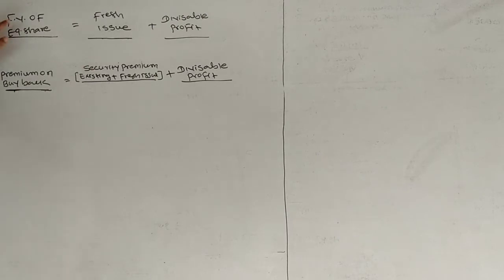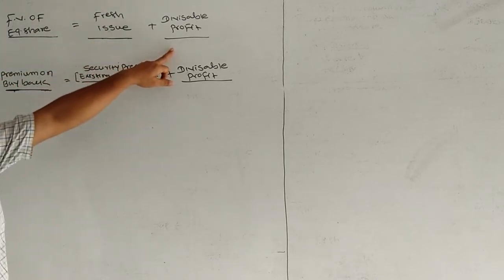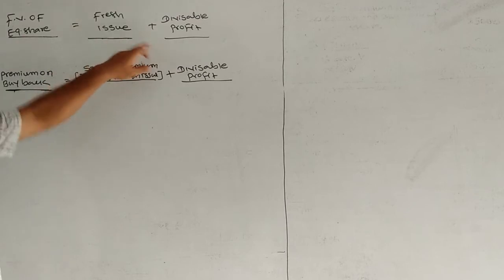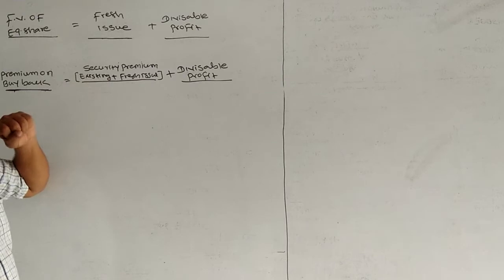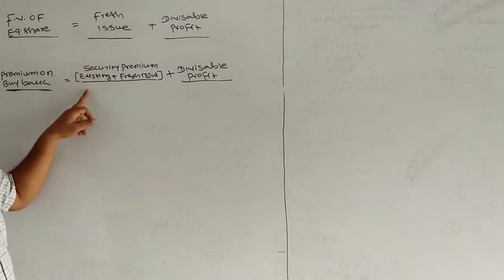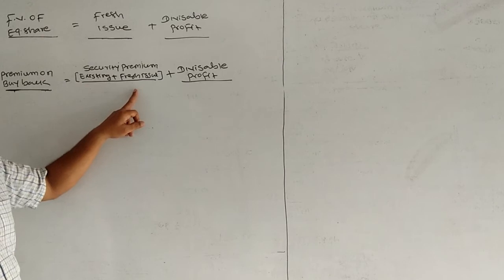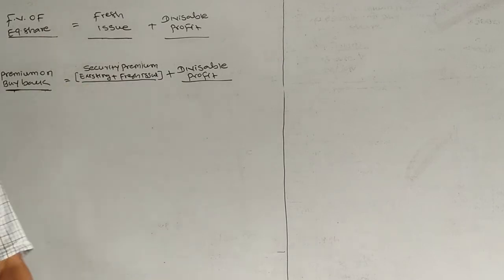Now I'm going to tell you that as usual, in every question we will draw a small chart. This is not a formula. What have I written? Face value of equity shares - where will you arrange money for equity shares? Fresh issue. If it falls short, where will you take money from? Free reserves. These are the only two sources from which I can do buyback. Premium on buyback - if you are buying back your equity at premium, where will you pay from? From security premium. It can be existing or you can bring fresh issue. If it falls short, you'll take from free reserves.